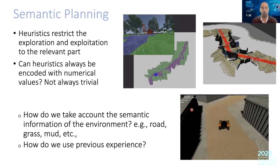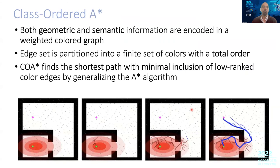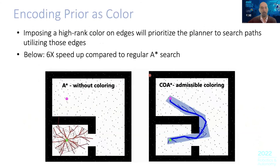The idea is how you can use semantic information to make planning better. You want an algorithm that combines both geometric and semantic information, encoded in some graph. Essentially, you look at the edges and want to color the edges in a certain way such that you get minimal inclusions of low-level edges. For example, in this scenario, the red edges are the worst. You can see how the path tries to avoid red edges as much as possible. This is a generalization of A* with a priority queue that allows you to put priority on the edges and minimize bad-colored edges.